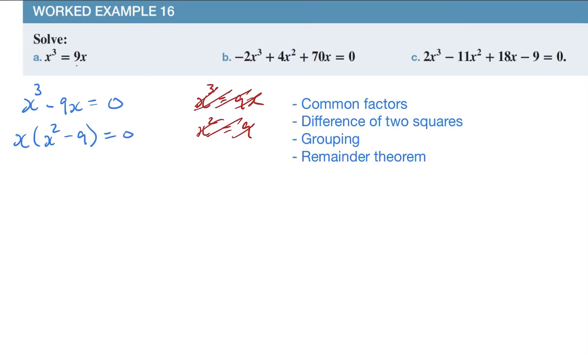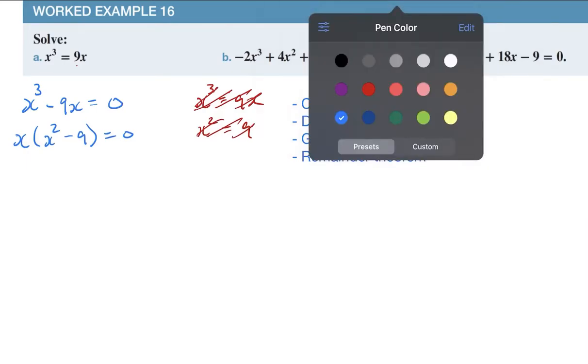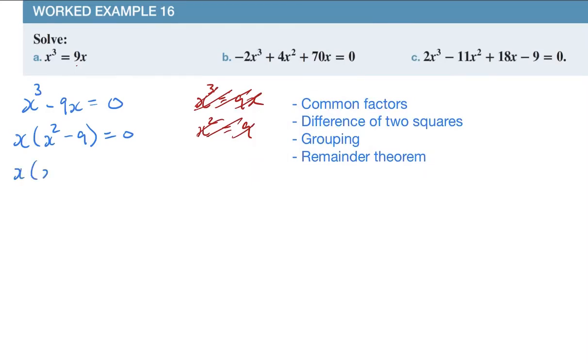I've taken common factors out. My next thing I'm going to look at is the difference of two squares. Now x squared minus 9, x squared is a square, so I can simplify that and say that is x times x minus the square root of 9 is 3, so it's x minus 3, x plus 3, that equals zero.